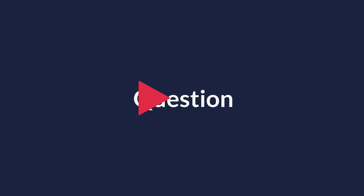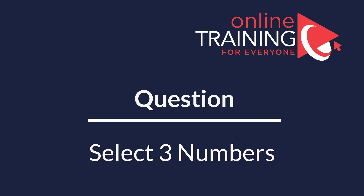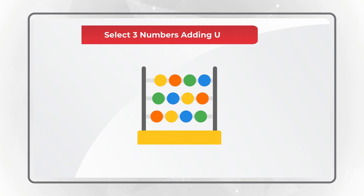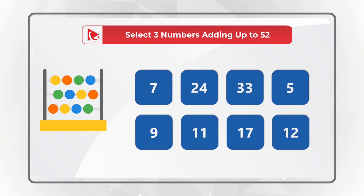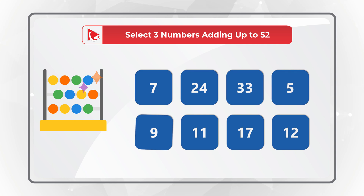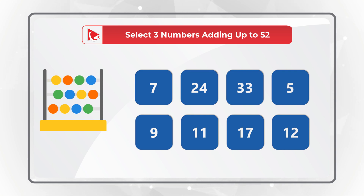Here is an unusual question, but we're starting to see it on the test more and more often. You need to select three numbers which add up to 52. There are eight choices: 7, 24, 33, 5, 9, 11, 17, and 12. Do you see the answer?